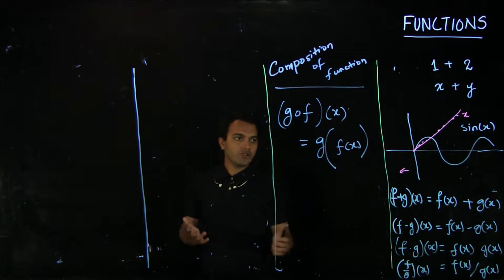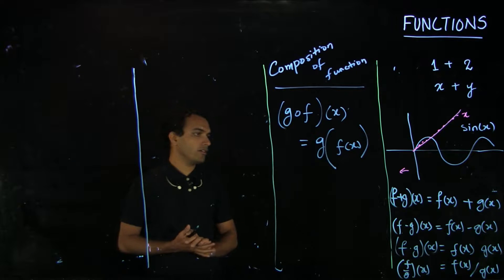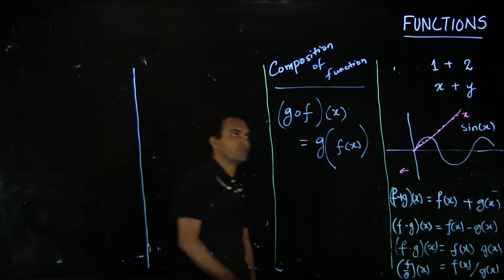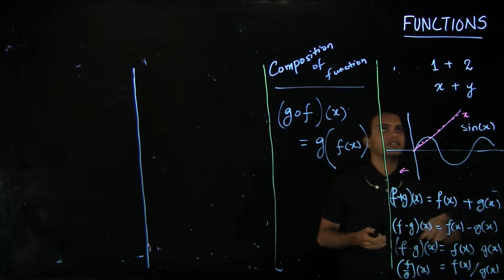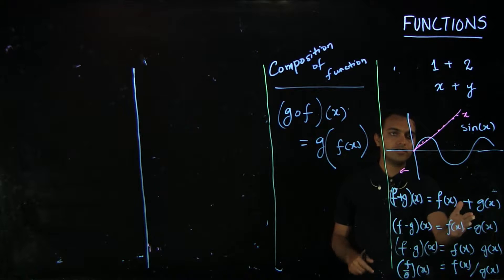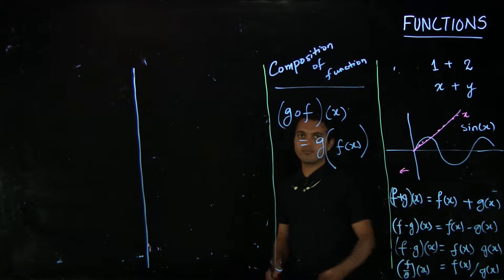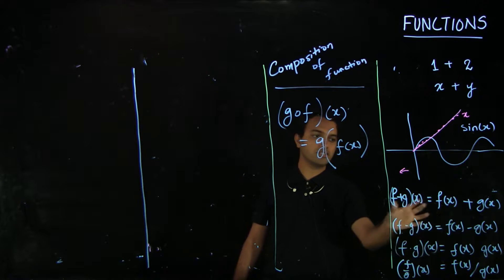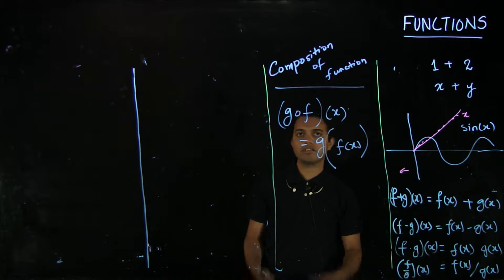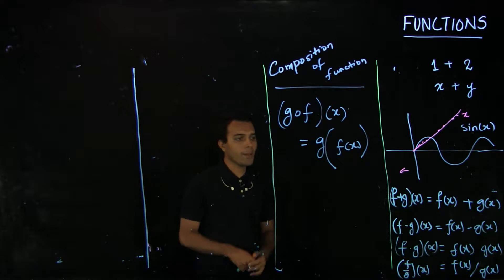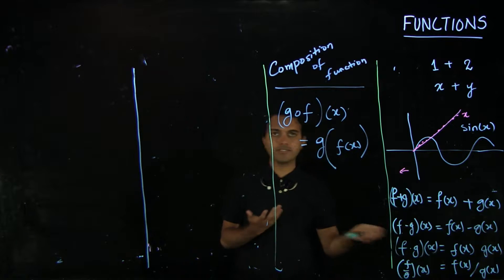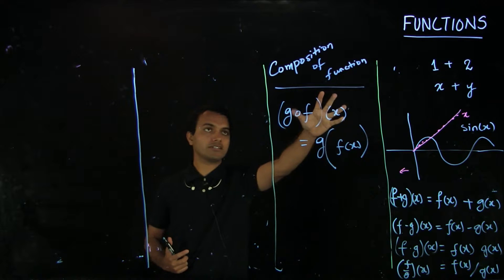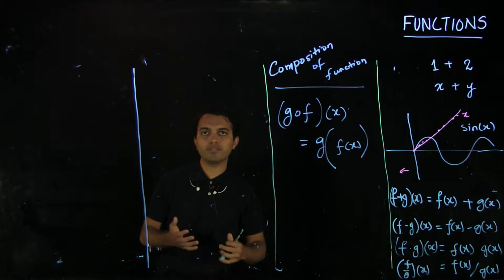So far we saw algebra functions. When we had two functions, we saw how they could interact — the analogy we started with is addition of numbers and variables, so addition of functions. But functions are more than numbers and variables, so we had to see when addition is possible, how it affects the domain and range of the resulting function, and similarly for other operations. Since functions are more than numbers, there are other operations which are possible, and this is the subject of this video: composition of functions.